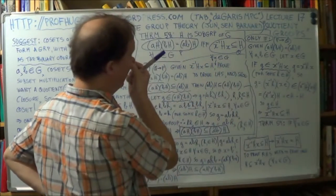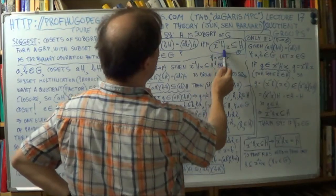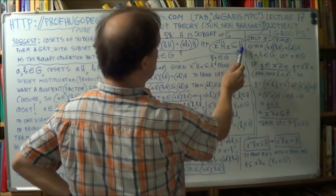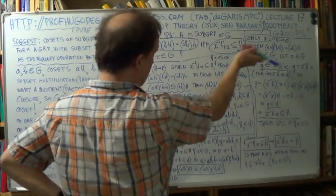We're trying to prove this. We're trying to show that this is a subset of H. That's what we're trying to prove. We're starting with this, we're going that way.